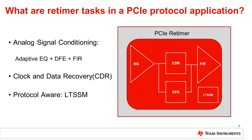The second function for a retimer is clock and data recovery, or CDR, which recovers incoming signal clocks and applies a low-pass filter to reduce high-frequency noise and jitter. It then uses this clean recovered clock to sample incoming data. The last task for a retimer is to actively participate in PCIe protocol communication.